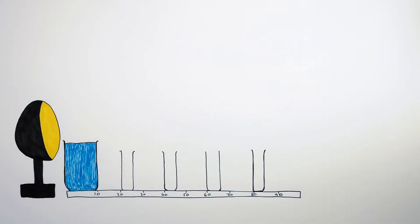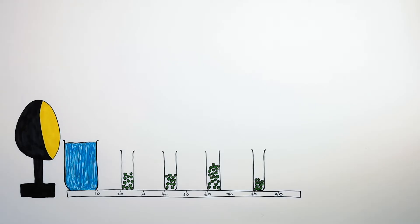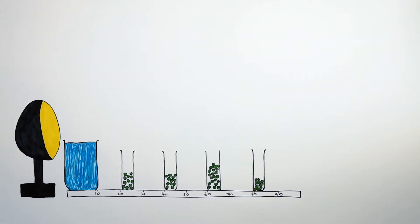You now need to fill each flask with the same number of algal balls. This is a control variable so that your results can be comparable. As you can see, in the first, second and fourth flask there are the same number of algal balls. However, the student made a mistake and put in too many algal balls in the third flask. We're going to see the effect of this later.